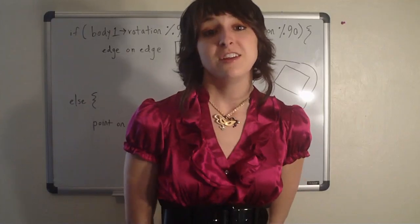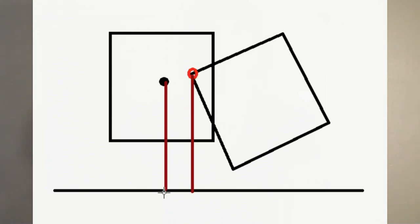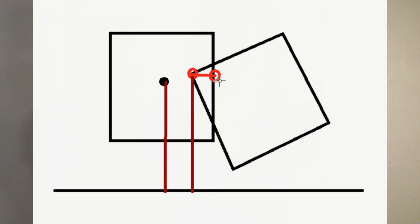Let's start with point on edge. To find the vertex of B that deepest penetrates A, we must revert back to the linear algebra of the separating axis theorem. The deepest penetrating vertex of B is that whose vector projection onto the axis of minimal overlap is closest to the vector projection of A's origin onto the same axis. Then we just add the collision resolution vector to this vertex to find the point of contact.